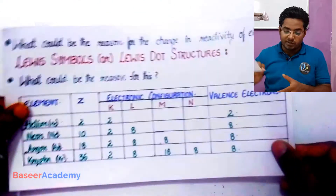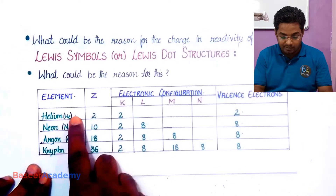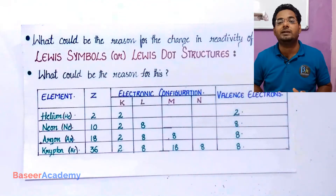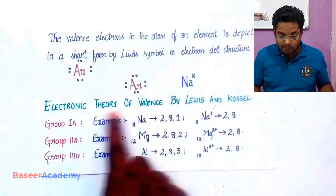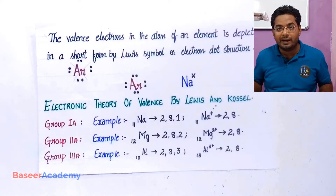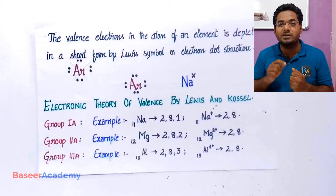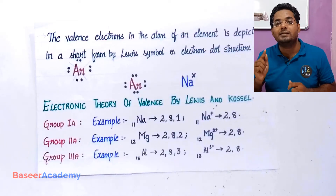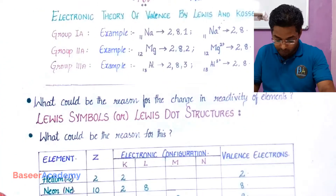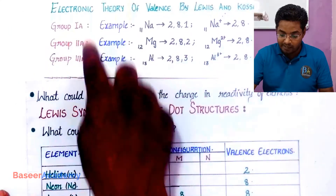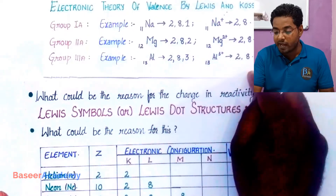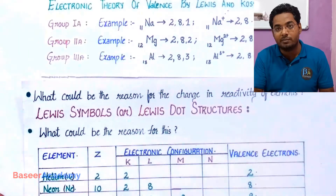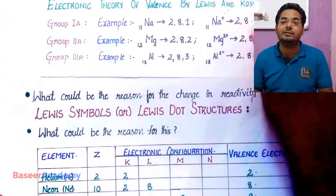In the previous video we saw that most of the noble gases, except helium, have eight valence electrons, meaning they have eight electrons in their outermost orbit. The electronic theory of valence by Lewis and Kossel talks about how atoms tend to lose or gain electrons so that they are left with eight valence electrons, just like the noble gases. They tend to lose or gain electrons during chemical bond formation so that they are left with eight valence electrons.